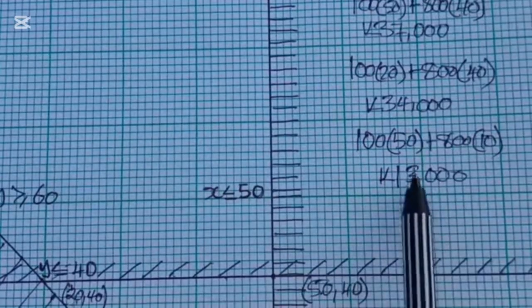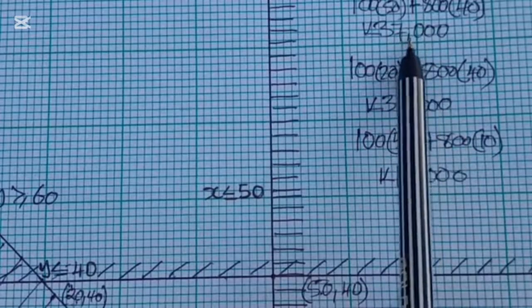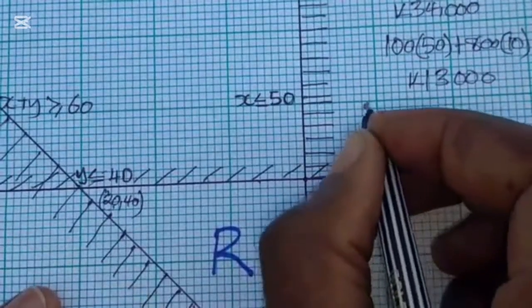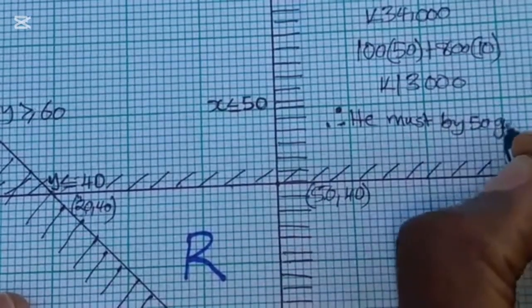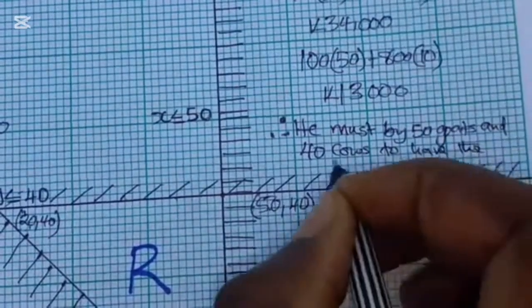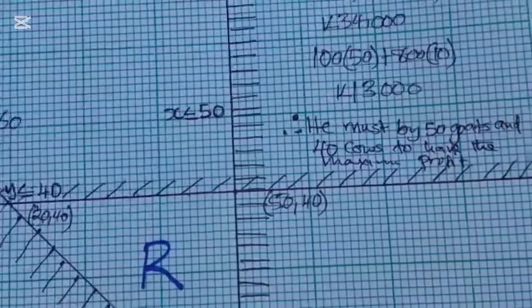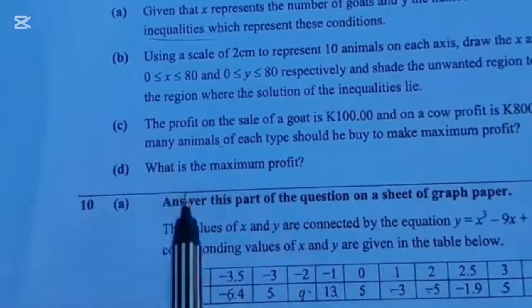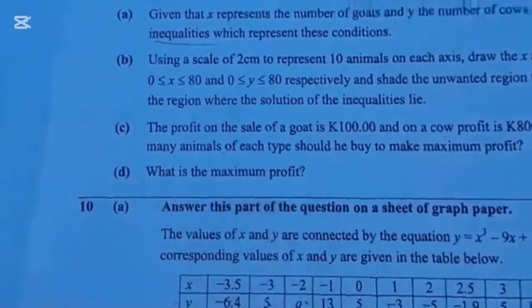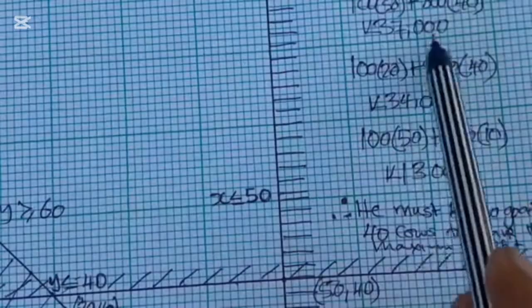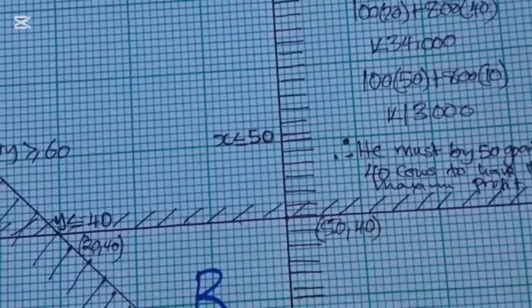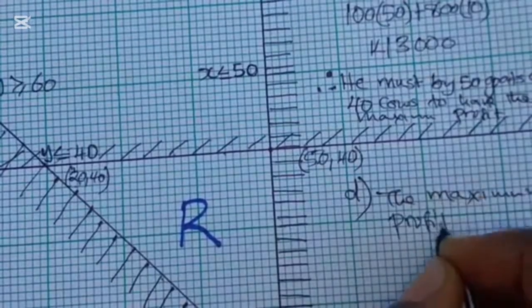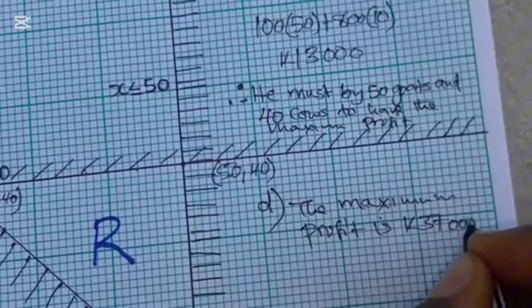Comparing all three values, the highest is 37,000 kwacha at the point (50, 40). Therefore, he must buy 50 goats and 40 cows to achieve the maximum profit. For Part D, the maximum profit is 37,000 kwacha.